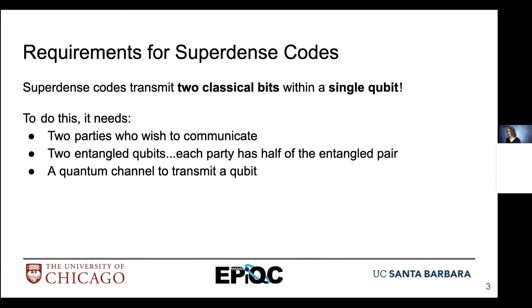We also need a quantum channel to transmit a qubit from point A to point B. And finally, our two-bit secret message that we're trying to transmit from Alice to Bob.